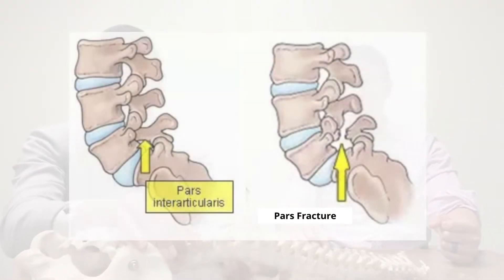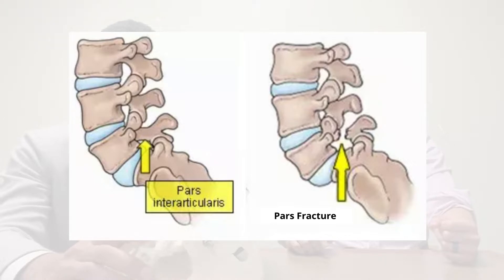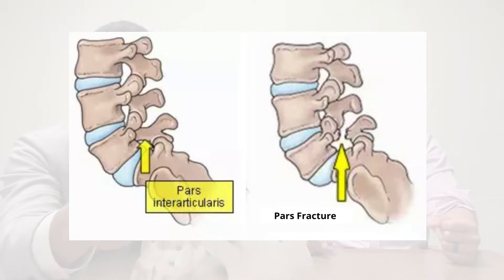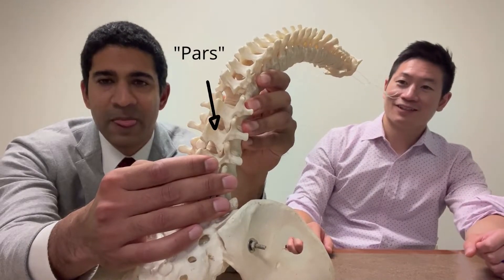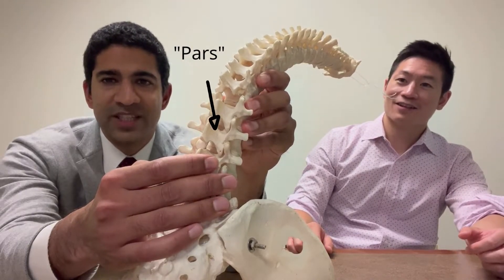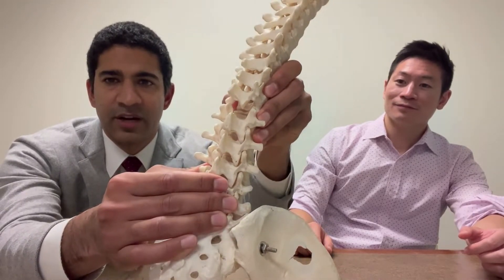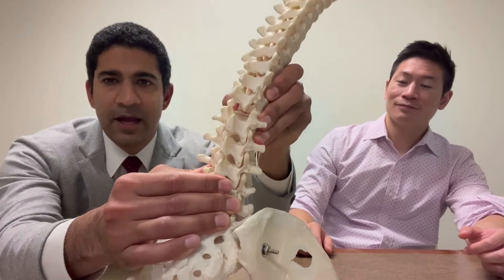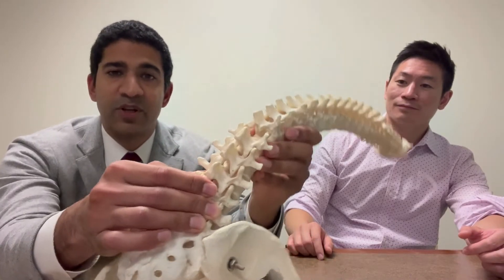So what is the pars? The pars is short for pars interarticularis. What that means is it's a portion of the bone — pointed to by the arrows here — that connects two joints in the spine together. As the spine undergoes a range of motion, the bone above it can actually act as a nutcracker and put stress on the pars area, causing it to either have a stress reaction or a frank stress fracture.